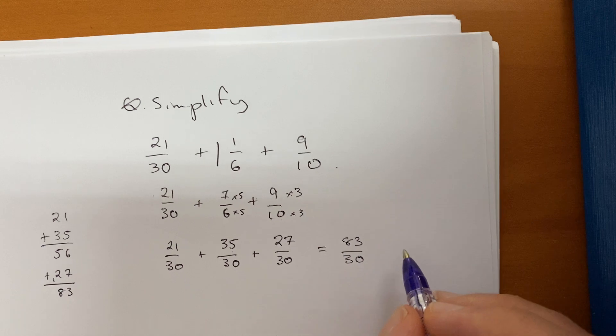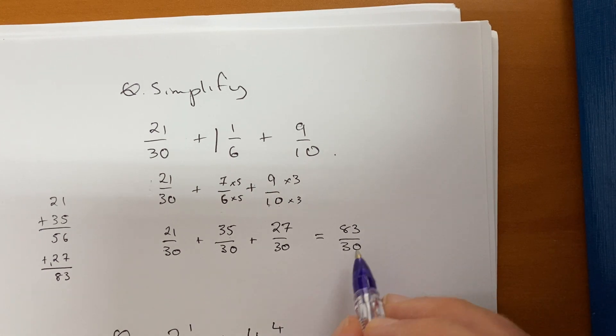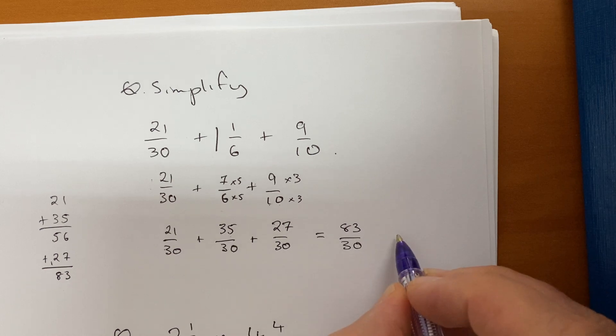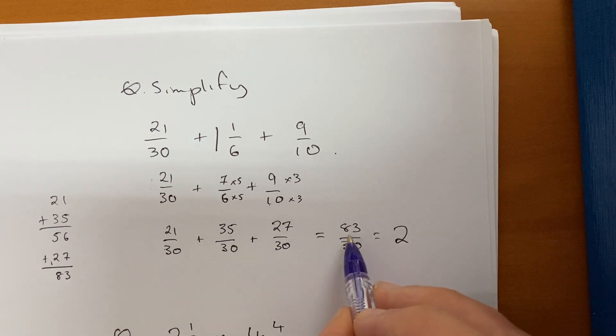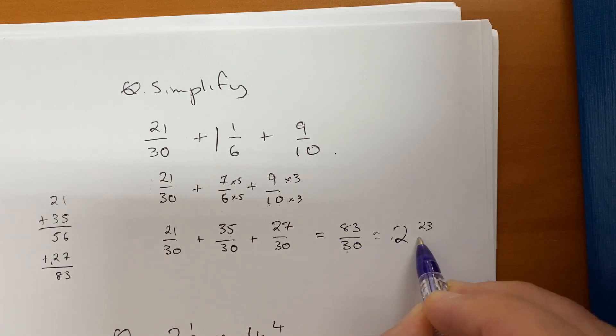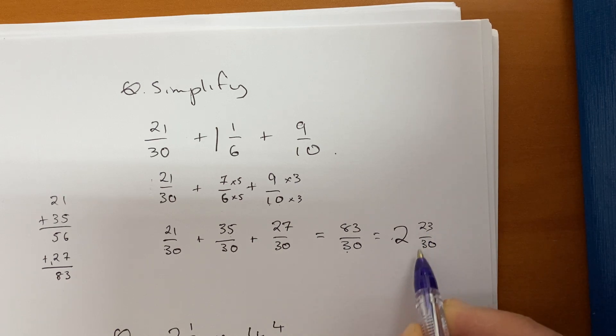Now if I want to convert that back into a mixed number, I need to find out how many full 30s fit into 83. I think two of them do, and that'll give 60. So 2 is the whole. What's left behind? Well, there's 23 left behind because 2 times 30 is 60, and 83 take away 60 is 23 out of 30. And check to see could that be simplified? No, it can't. That is a prime number, so it's not going to be simplifiable.